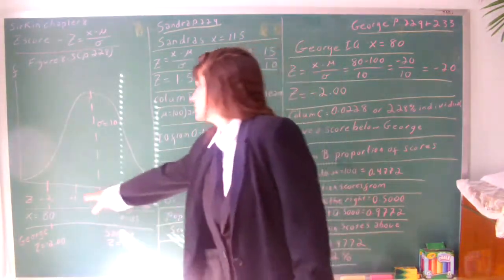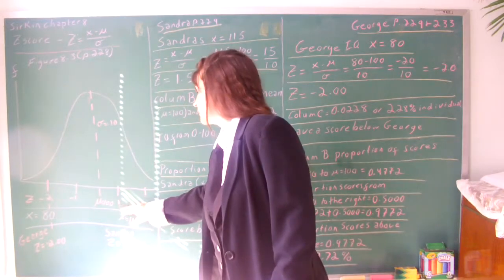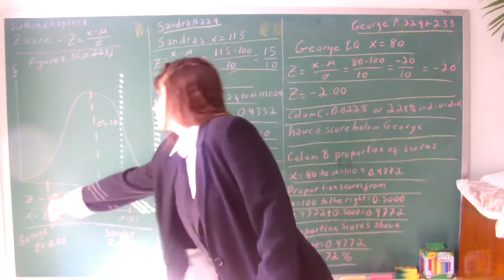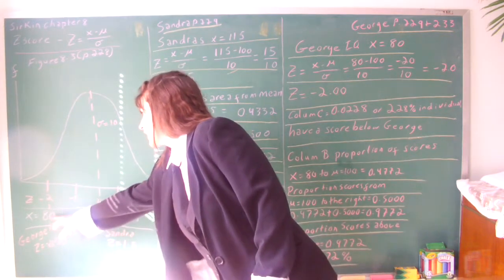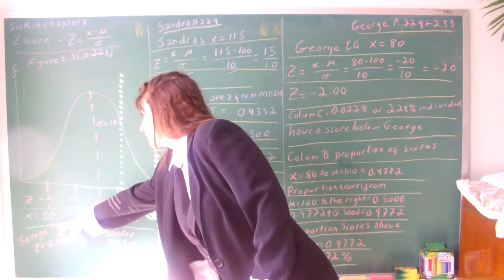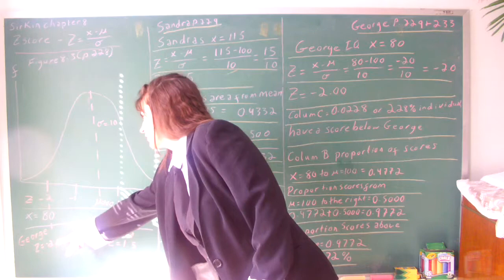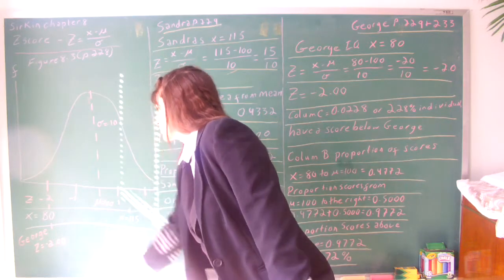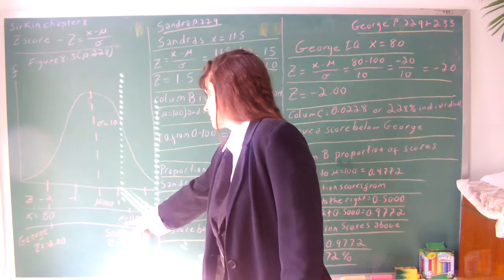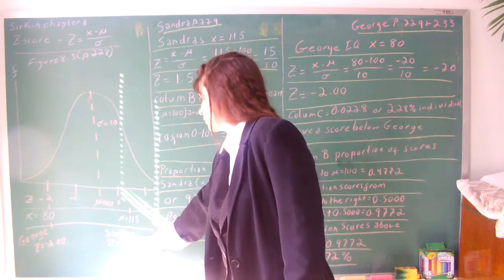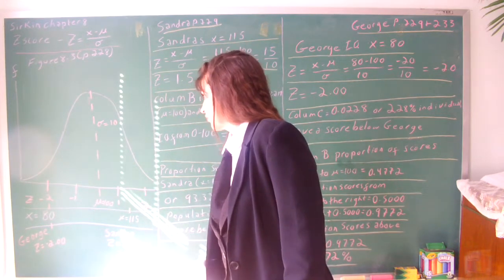You notice there's a negative 1 and a positive 1. These are your z-scores. Looking down on the negative 2, we see x equals 80, which is George's with a z of negative 2.00. And over here we'll be looking at Sandra's, which is x equals 115, giving you z equals 1.5.